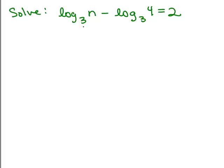See if you could solve this one on your own by putting the video on pause and trying it first. Again, we don't have a single log on the left-hand side but we have a subtraction so we can use the quotient property. The log base 3 of n over 4 is equal to 2. So that 3 to the second power, 3 squared equals n over 4 or n over 4 equals 3 squared.